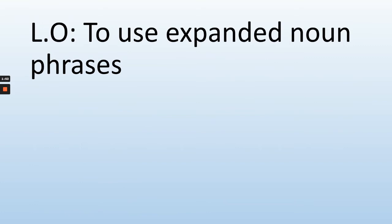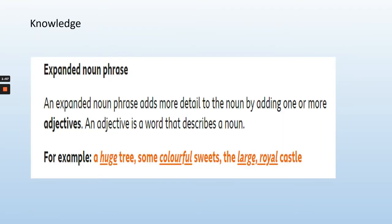So today we are going to use expanded noun phrases. An expanded noun phrase adds more detail to the noun by adding one or more adjectives. An adjective is a word that describes a noun. For example: a huge tree, some colourful sweets, the large royal castle. It adds more detail and description to the noun, making your writing more exciting.